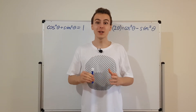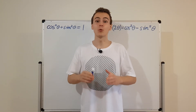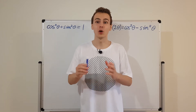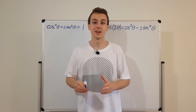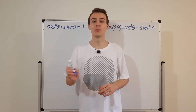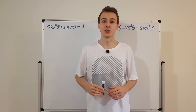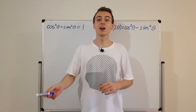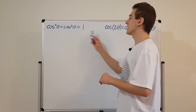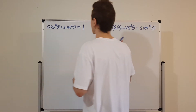Let's derive a trigonometric identity that tells us what happens when we square cosine. We're going to need two other trigonometric identities to do this derivation. In the past few videos, we derived these two trigonometric identities.